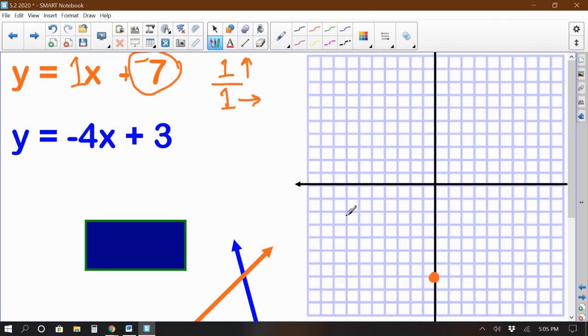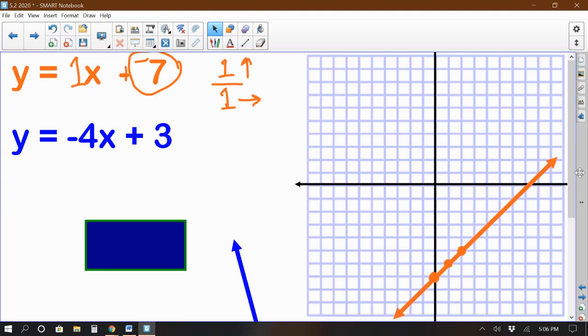So from this negative 7, we're going to go up 1 and right 1. So here we go. Up 1, right 1, put another point. Could keep doing this if I wanted to. Up 1, right 1, up 1, right 1, and so forth. But that's enough for me to get an idea of where my first line goes. So let's come back, and you can see I've already made a line. You bring that over, get it lined up nicely, and yeah, that's pretty good. So there's our first line for this first equation, y equals x minus 7.